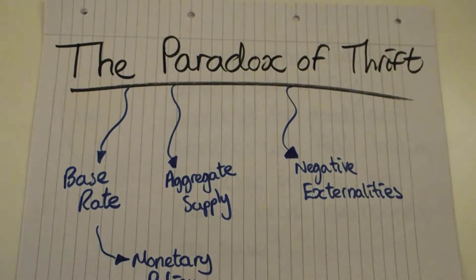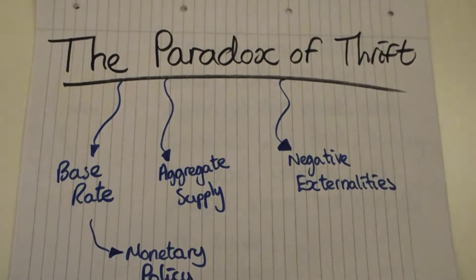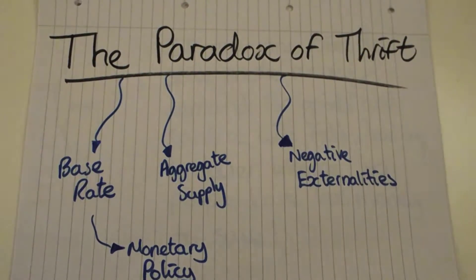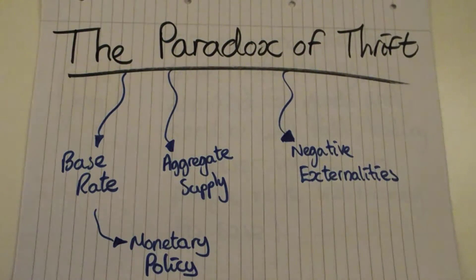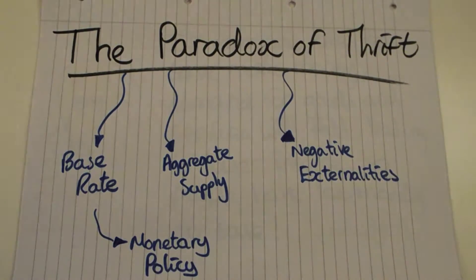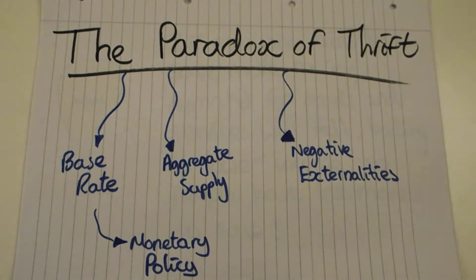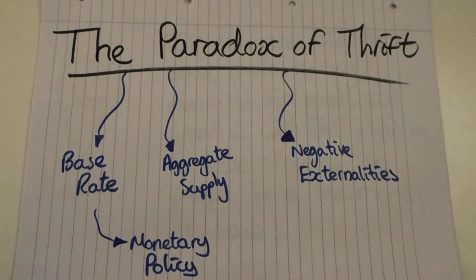Hi, my name is James and in this video I'm going to be talking about the paradox of thrift. I'm also going to be covering some A-level economics syllabus content: the base rate, what the base rate is, monetary policy, aggregate supply, and I'll briefly explain what negative externalities are at the end of the video in the context of the paradox of thrift.